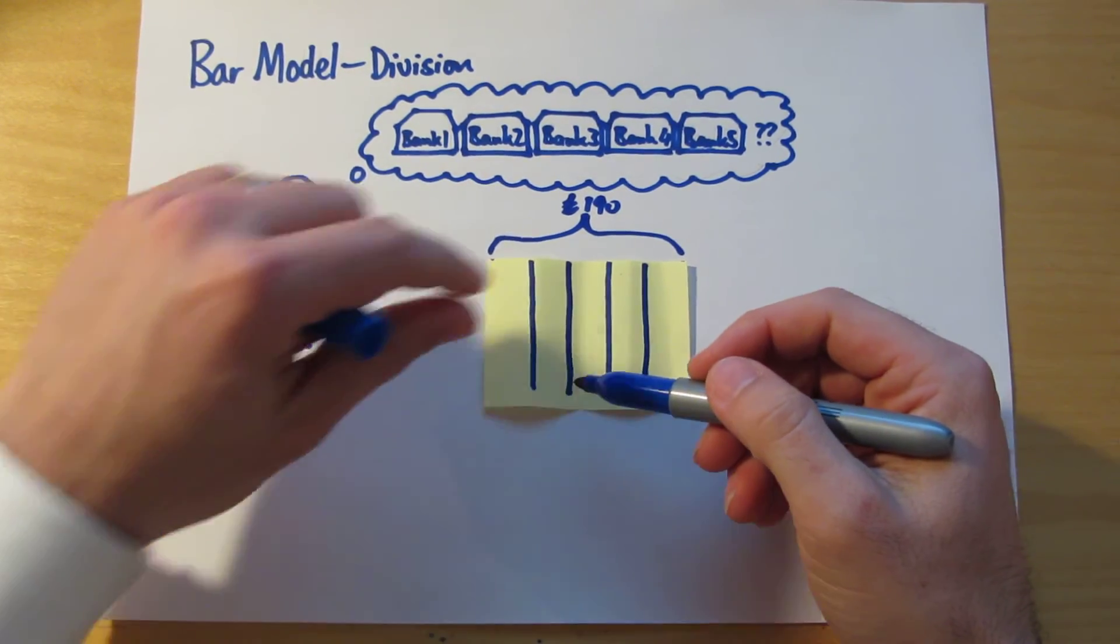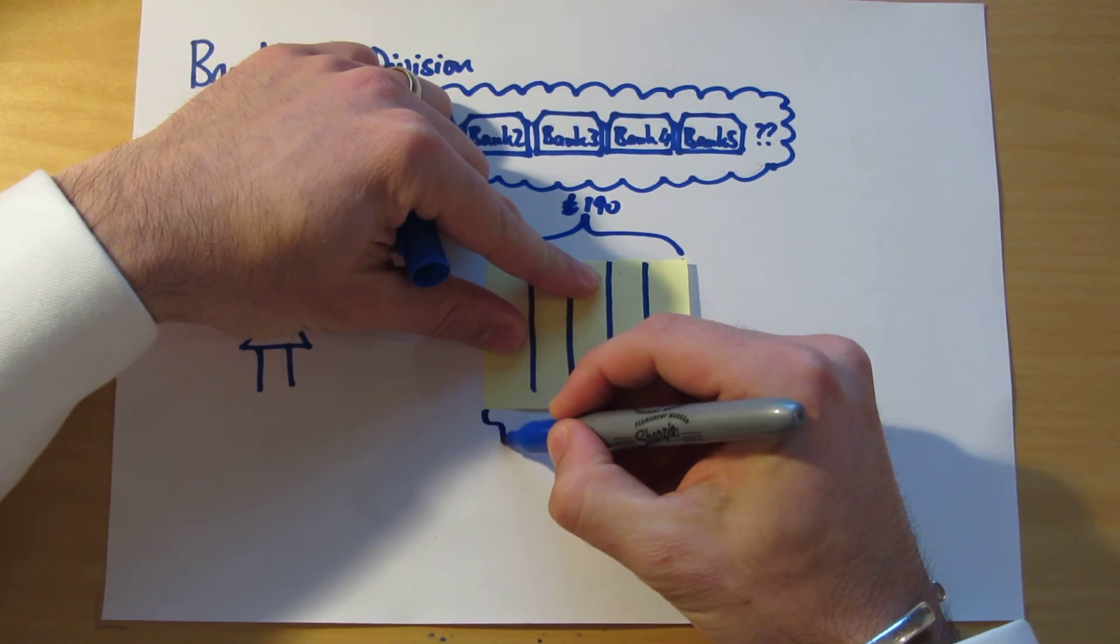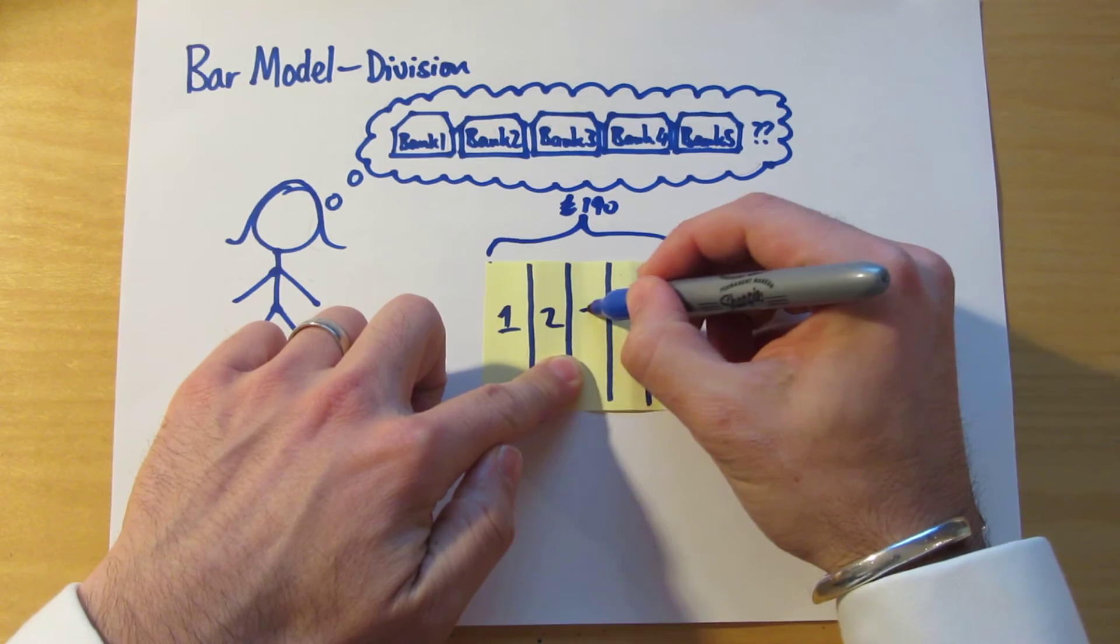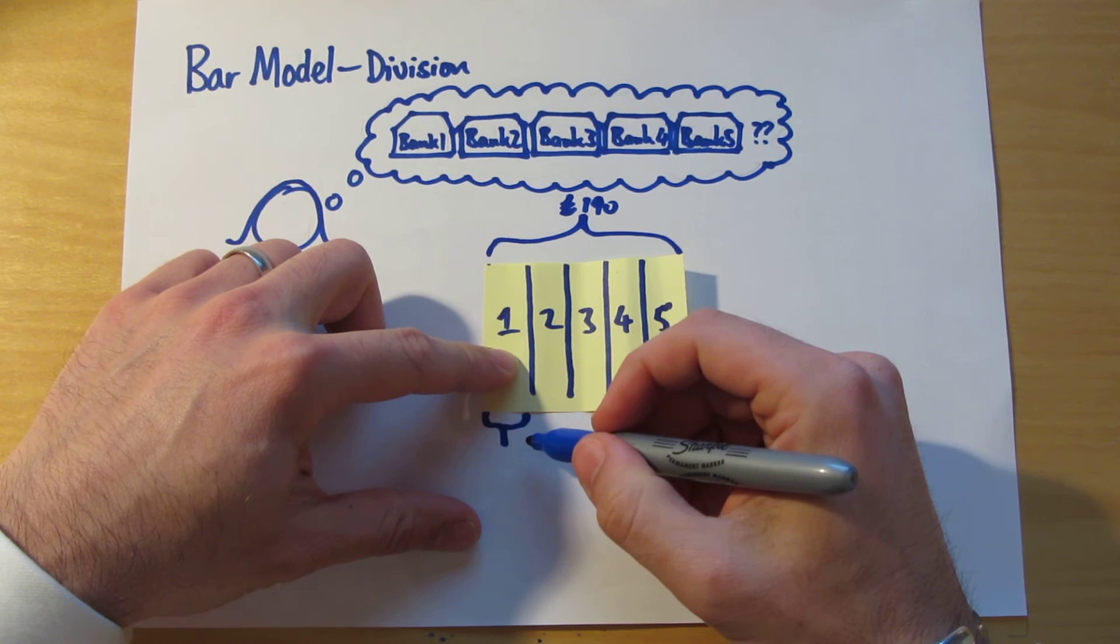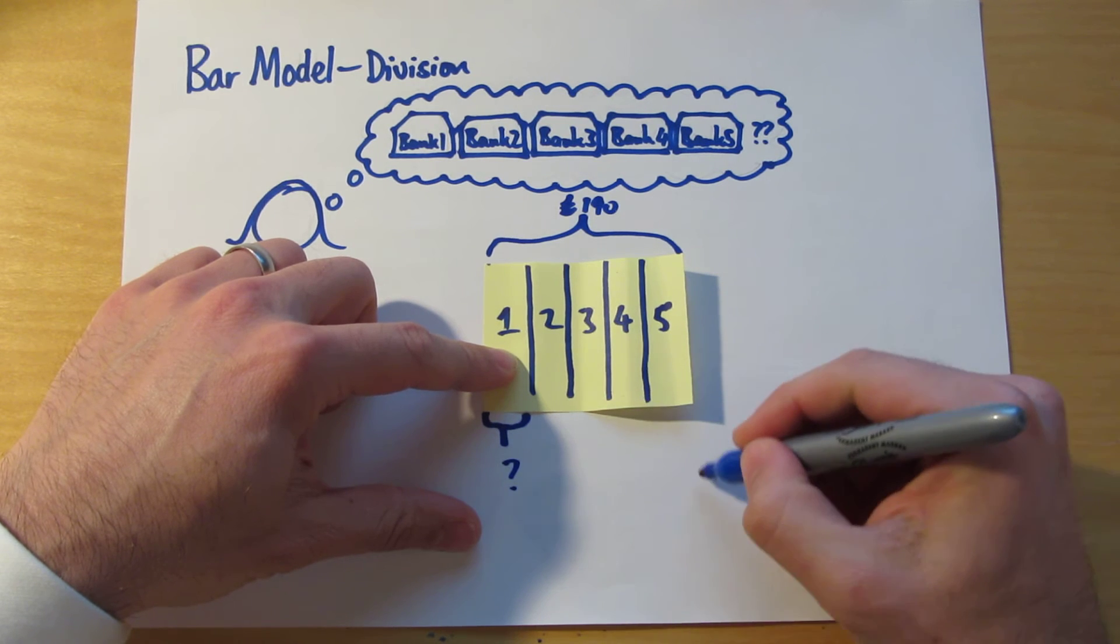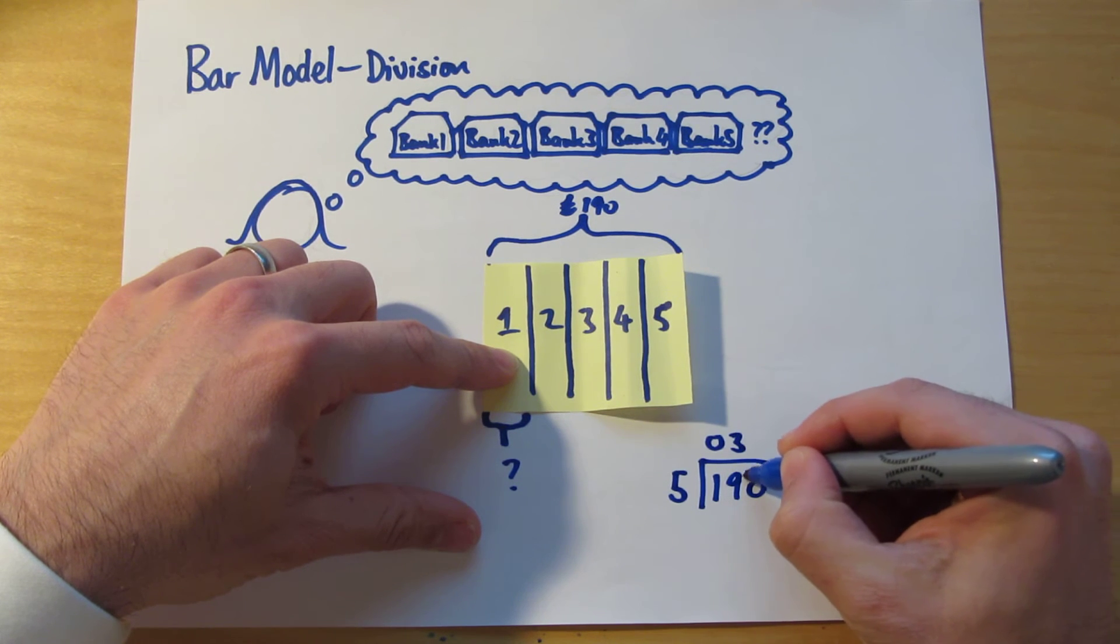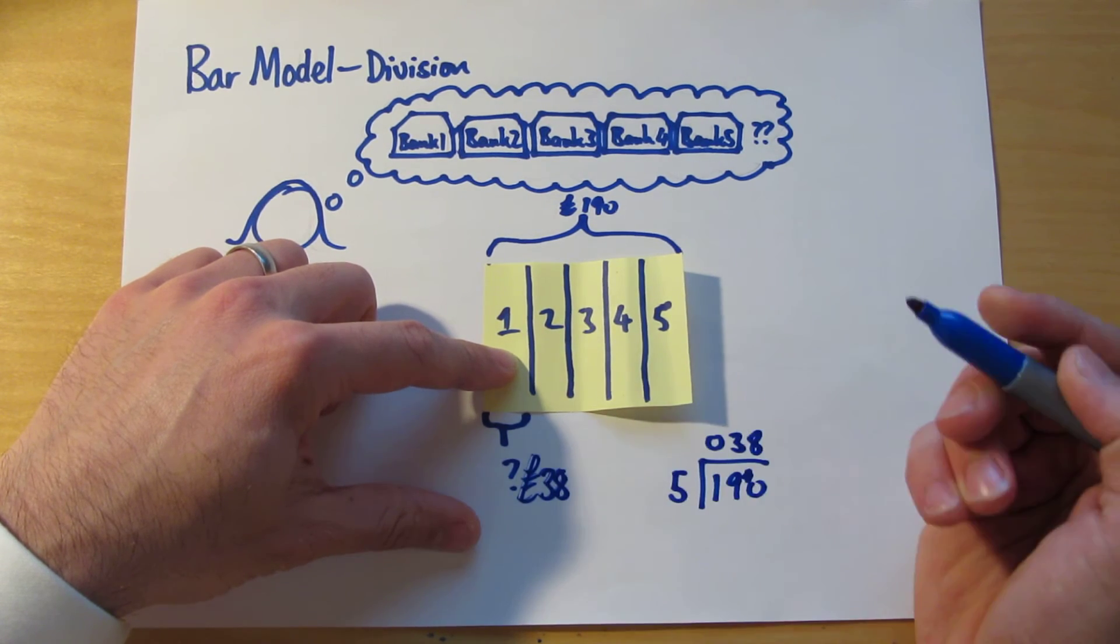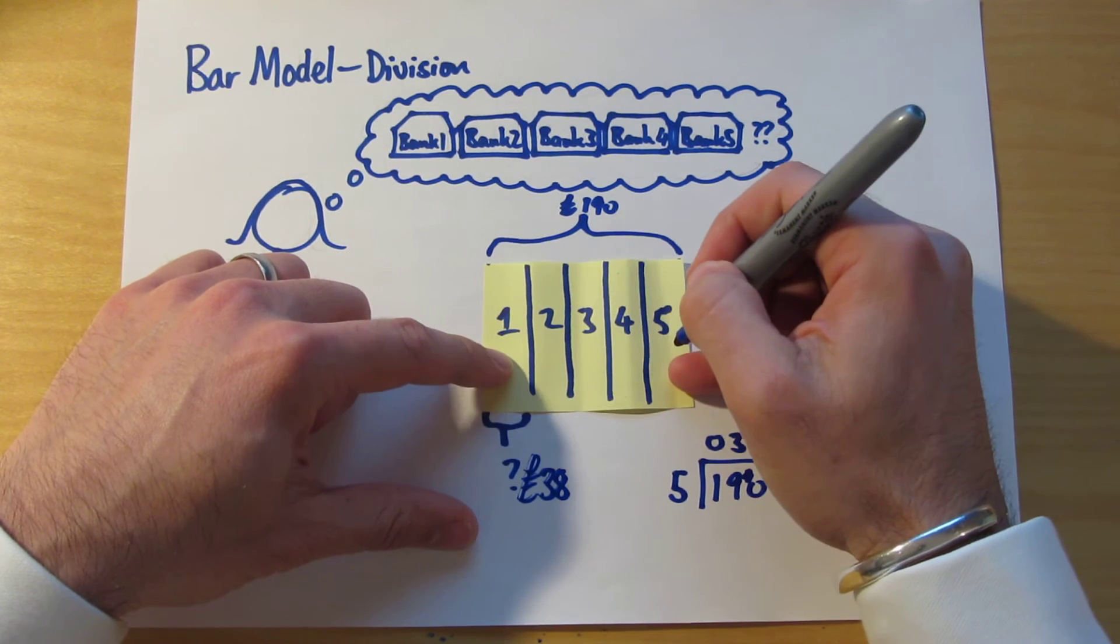So the question is how much has she put into each bank account? Well, each one of these portions now represents how much she's put into one of the bank accounts. So let's say that's bank account one, bank account two, bank account three, bank account four and bank account five. And to work out what she's put in any one of them, or into each of them, we have a division problem on our hands and we would need to do 190 divided by five. 38. So she has put 38 pounds into each bank account. 38 pounds into bank one, 38 into bank two, into bank three, into bank four, 38 into bank five.